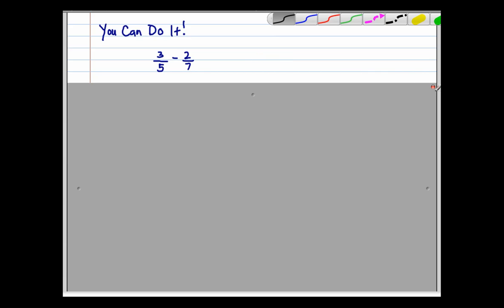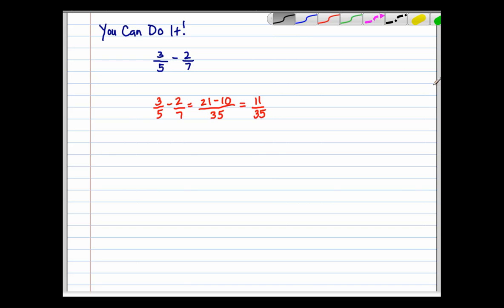Now it's time to check it out and see if you got the correct answer. The answer is 11 thirty-fifths, but the process in getting that answer is 3 times 7 is 21 minus 5 times 2 is 10, all over 5 times 7 is 35. In the sequence of thirty-fifths, 21 minus 10 is 11. That's how we get the answer of 11 thirty-fifths.